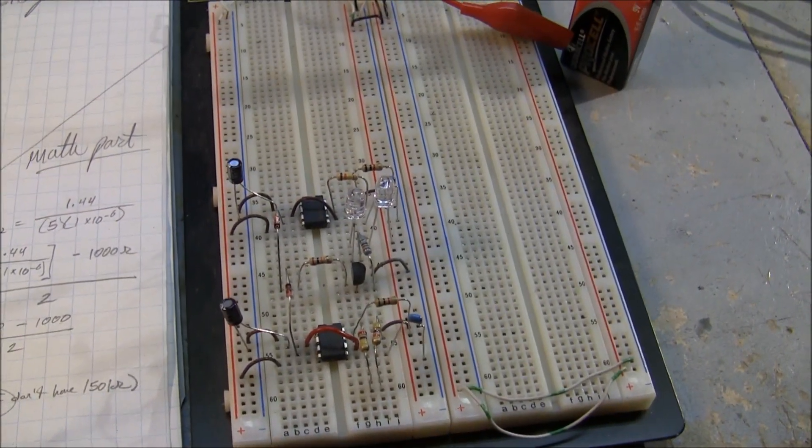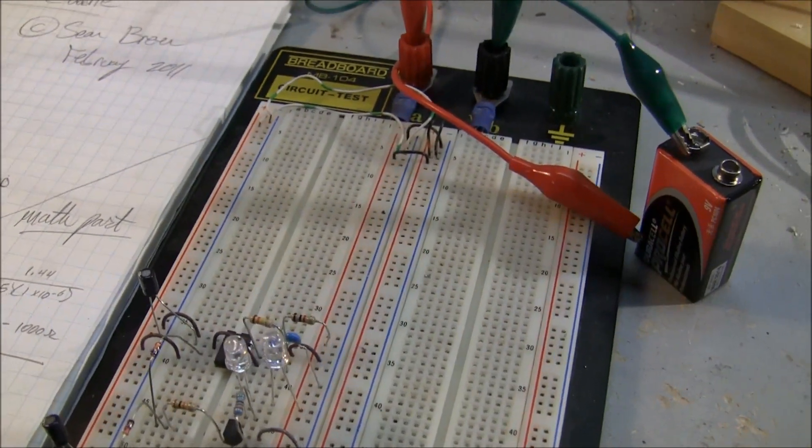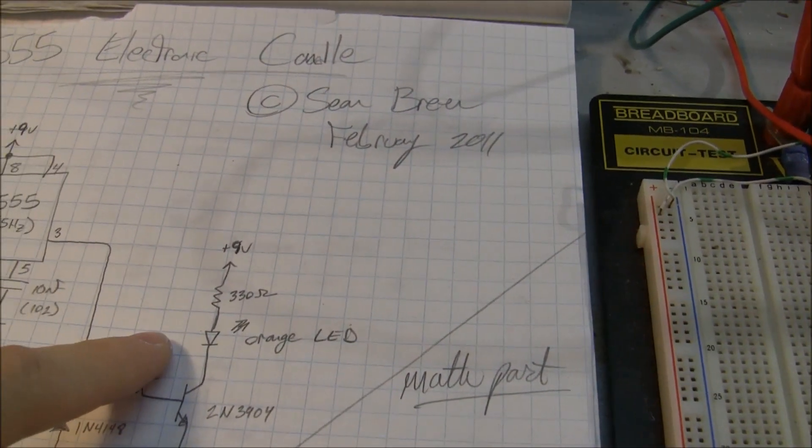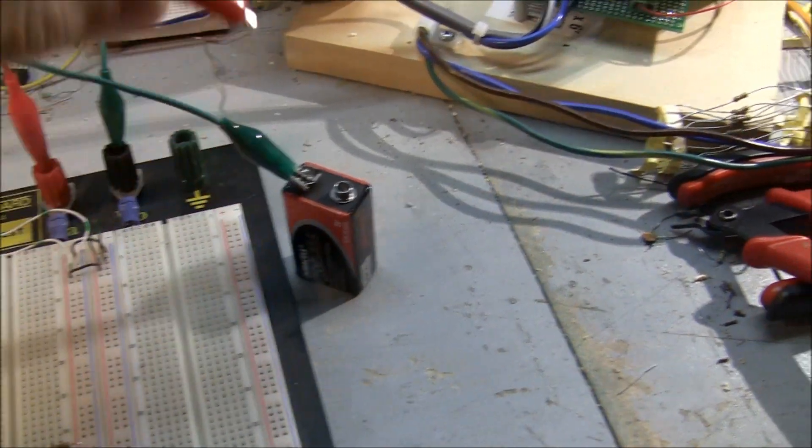So you can see, I'll get in close. I actually put two LEDs and you can put a whole bunch. Just change the value here of your resistor for the appropriate current you need to drive the LEDs. So I can turn it on now. I've got my 9-volt battery here, so I'll just put some power in there.